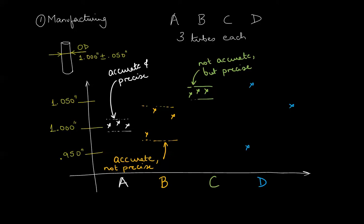Company D is a disaster. Not only are their tubes nowhere near each other, their ODs are also far away from the target itself. Company D is therefore inaccurate and imprecise.